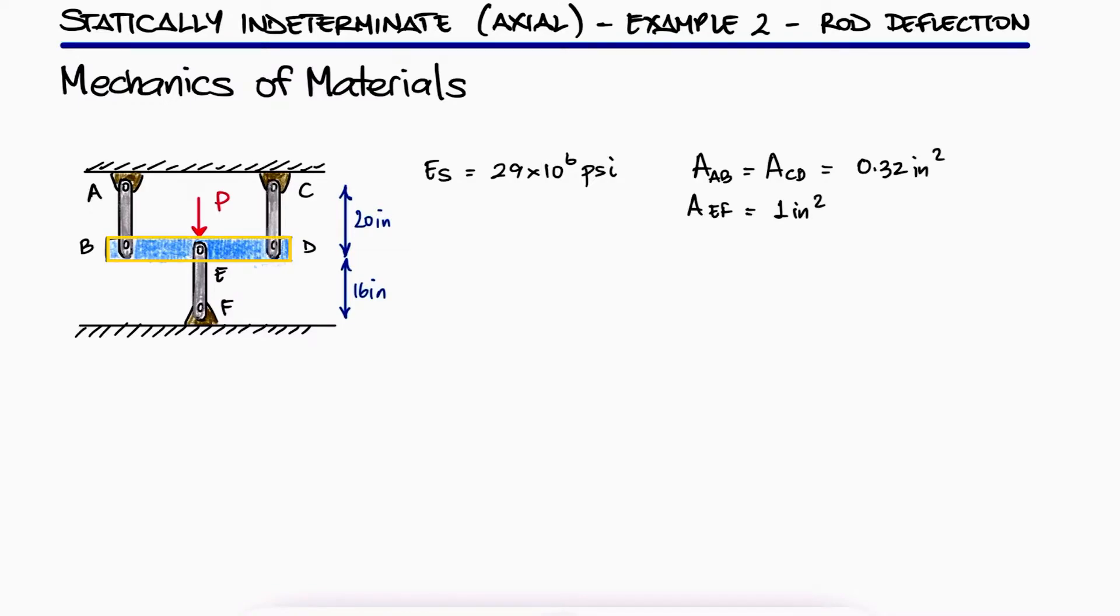If bar BED cannot deform, what is the changing length of rod EF and the stress in each rod?